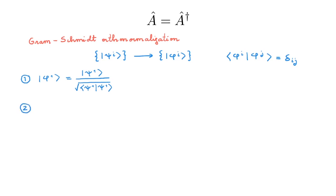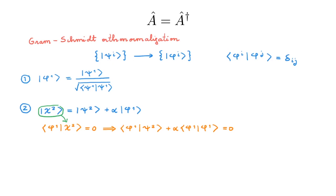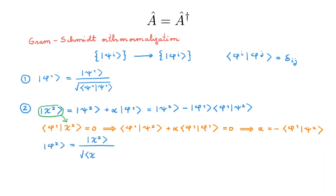The second step is to build a state perpendicular to phi_1. We define a ket chi_2 equal to psi_2 plus some multiple alpha of phi_1, and insist that chi_2 is orthogonal to phi_1, so that bracket equals zero. Plugging in the expression for chi_2 shows that this term vanishes if we choose alpha equal to minus the bracket of phi_1 with psi_2. Replacing this above gives us how to build chi_2 in terms of psi_2 and phi_1 while ensuring orthogonality. We then define phi_2 to be parallel to chi_2 but normalized.